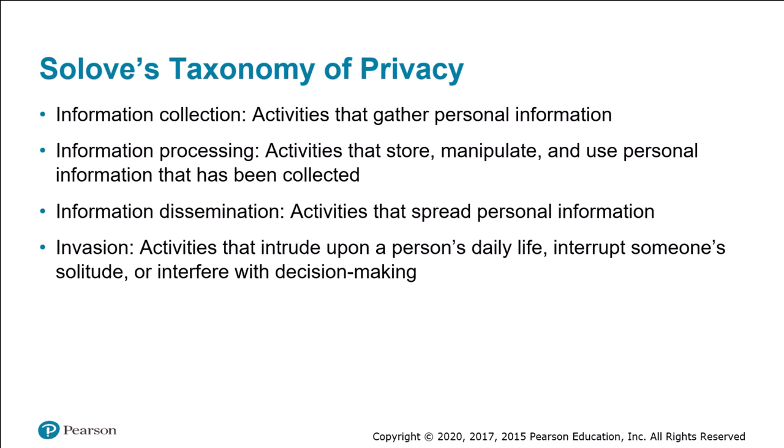We'll focus on information processing in sections 6.7 through 6.9. Third is information dissemination, which refers to activities that spread personal information — section 6.10 will provide examples of this. Category four is invasion, which refers to activities that intrude upon a person's daily life, covered in section 6.11. We're going to consider each of these categories in turn, examining how federal, state, and local governments have addressed the often competing interests of protecting personal privacy and promoting the common good.